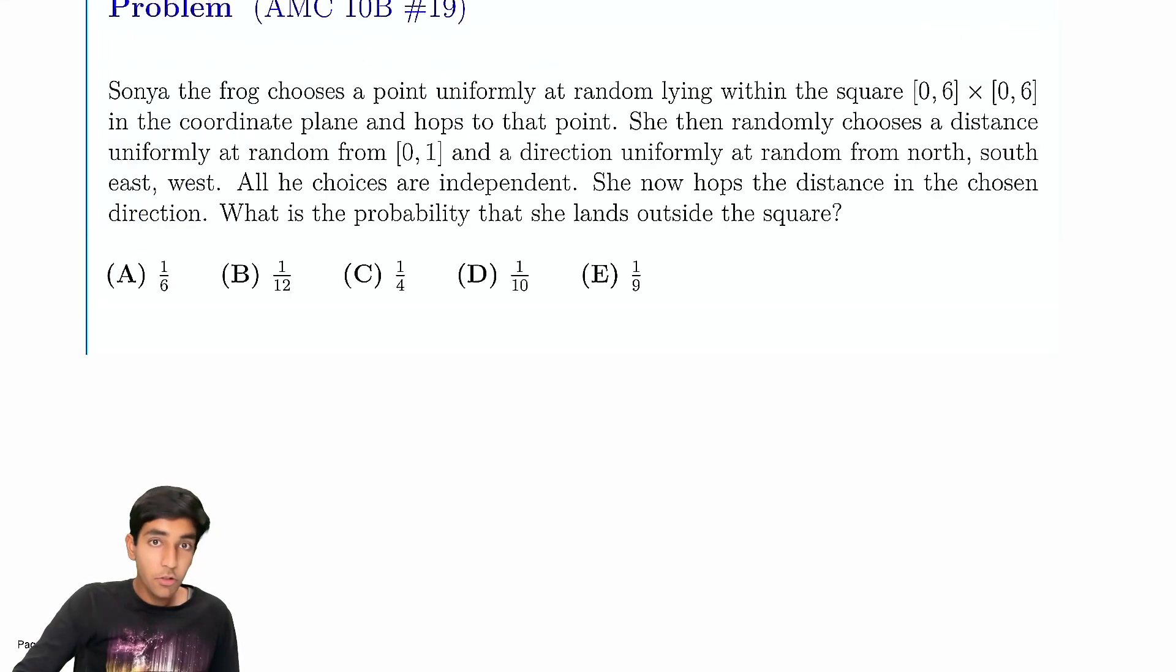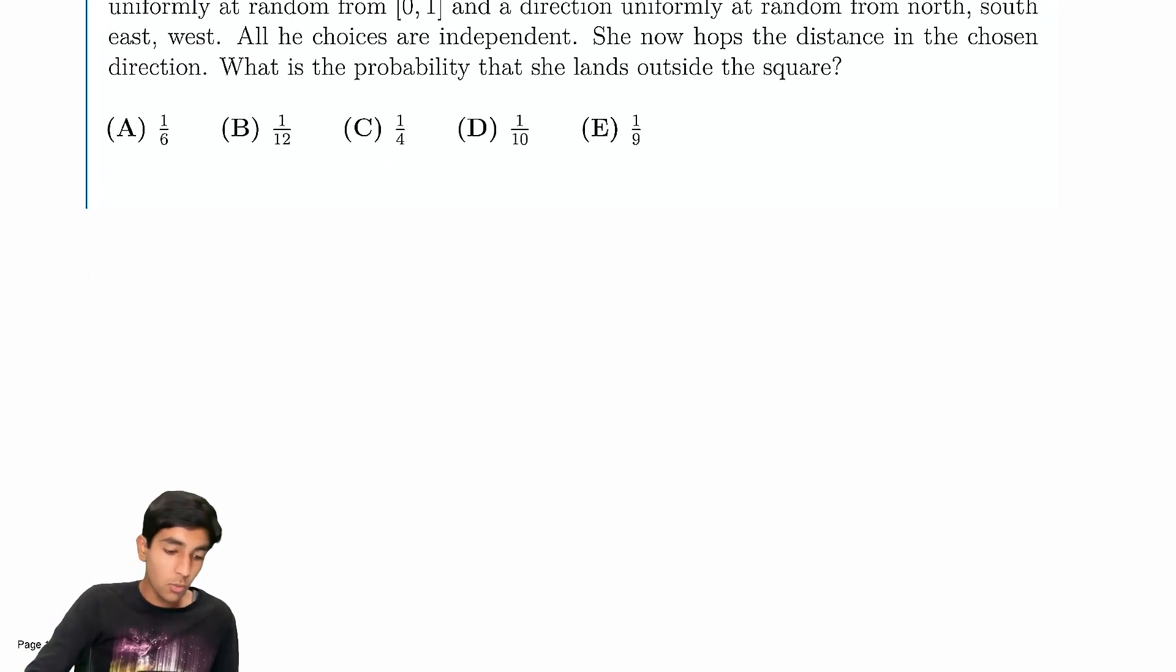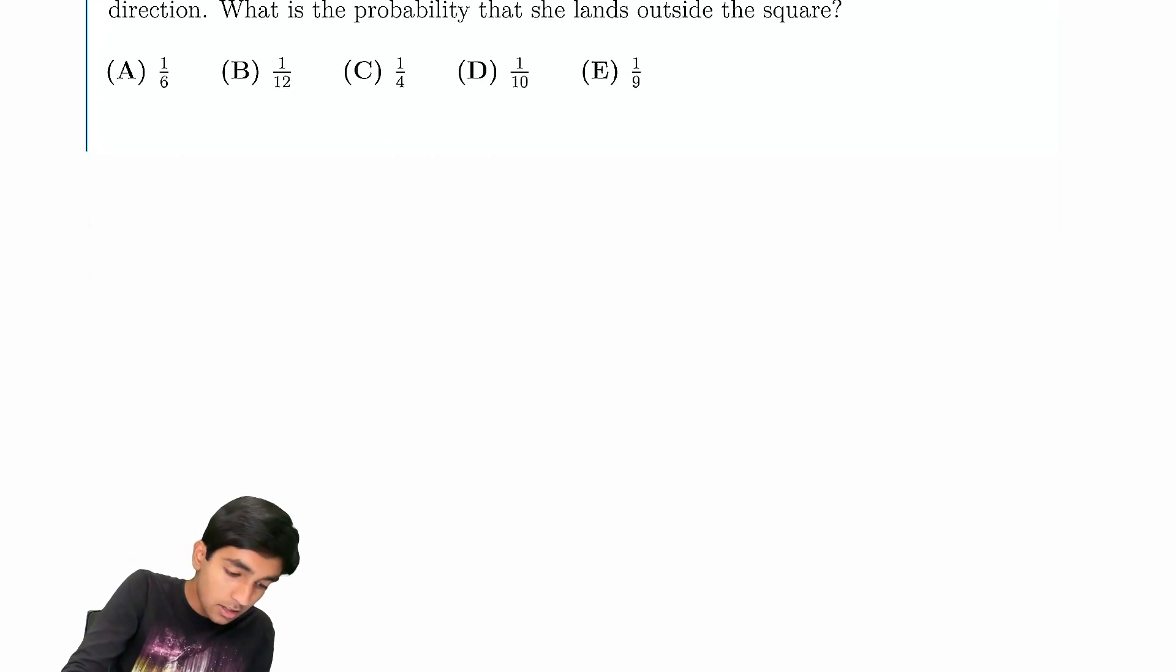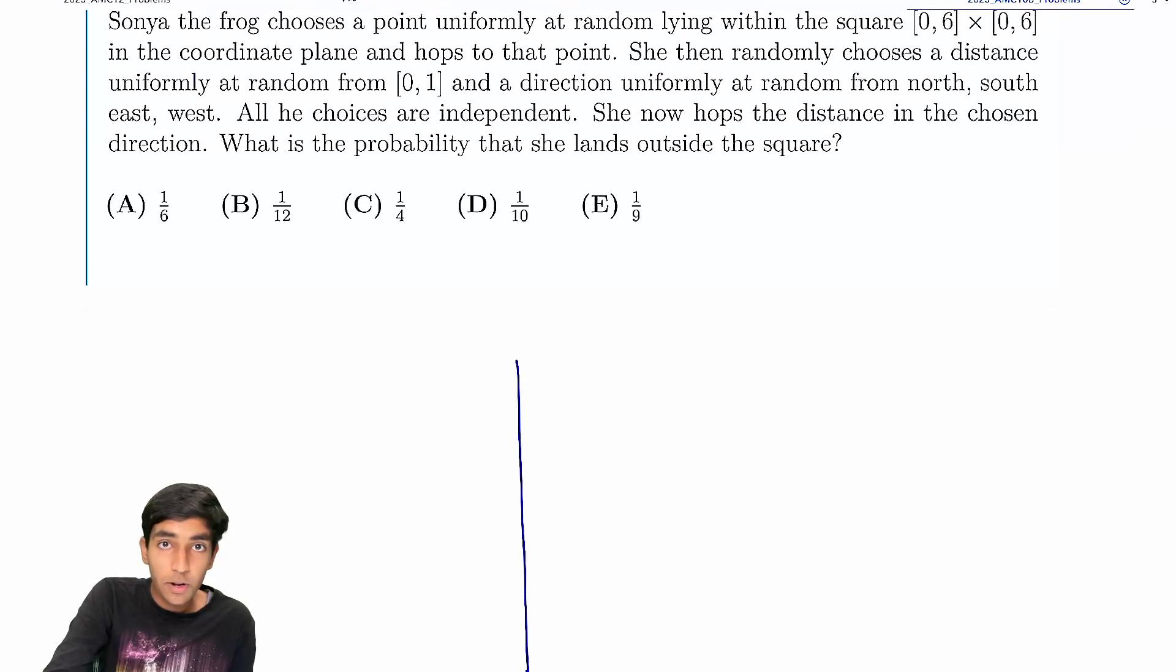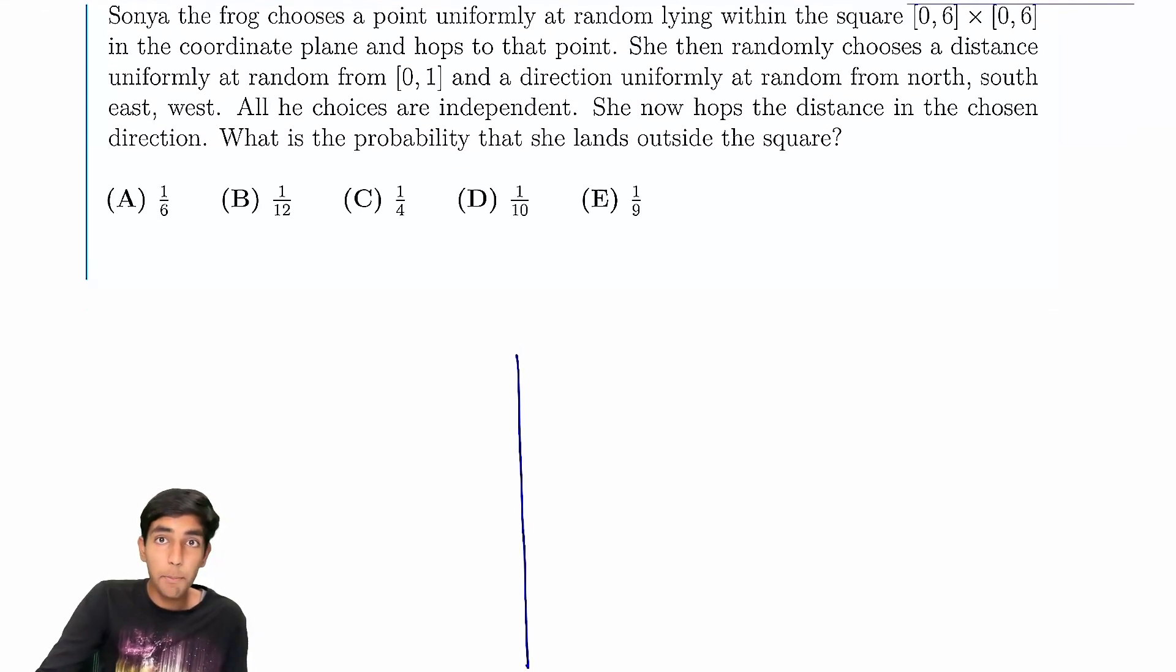Sonya the frog chooses a point uniformly at random lying within the square [0,6] × [0,6] in the coordinate plane. Then she hops to that point a random distance between 0 and 1 uniformly. We've got a 6 by 6 square, basically.